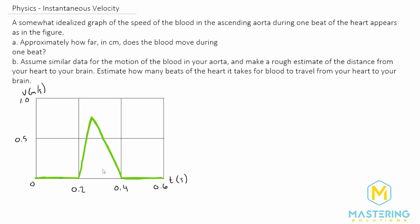So this is the one beat right here. And then for part B, they say if we assume that there's similar data for your ascending aorta, they want us to make a rough estimate of how far that is and how many beats it would take to go from your heart to your brain.